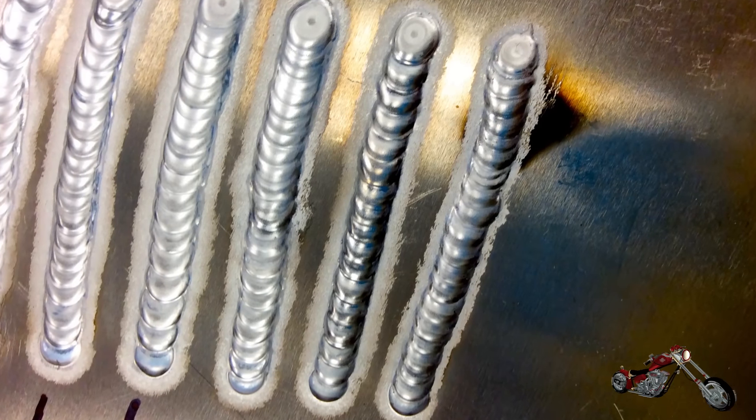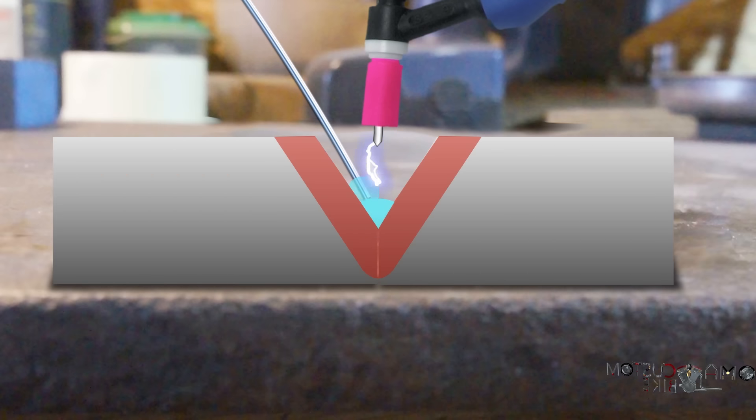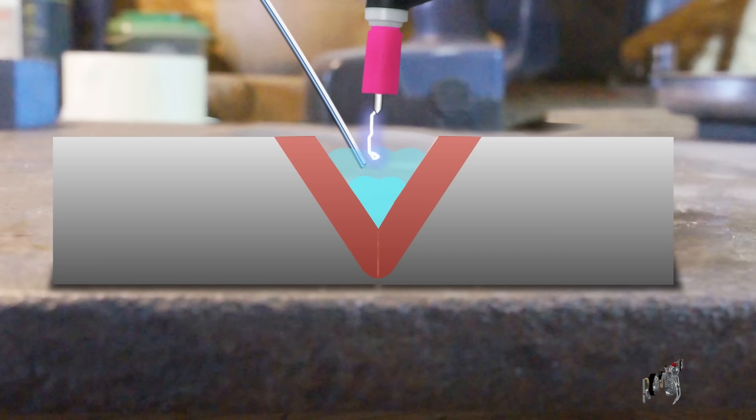To join two thicker pieces it's ideal to bevel the edges to form a V-shaped gap between the two pieces and ensure a deep penetration of the weld. If needed more passages can be overlapped to achieve full filling of the gap.